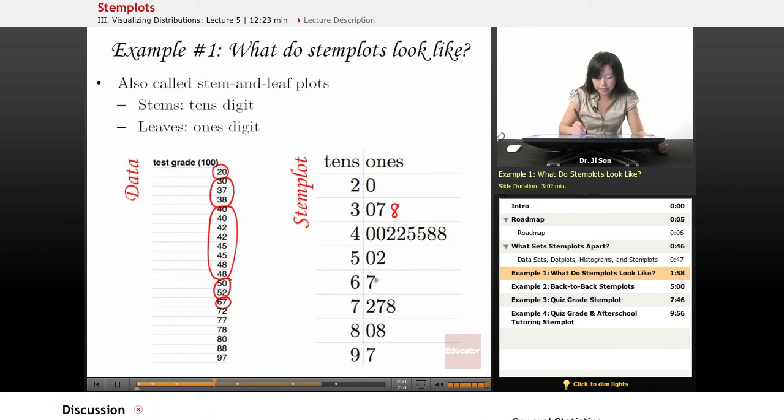For the 70s, there's three people. So I put the two, the seven, and the eight, the ones places. And for the 80s, there's two people, the zero and the eight. And for the 90s, there's just one person who got a 97.